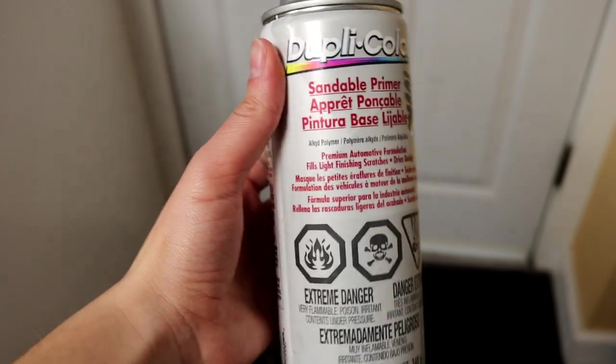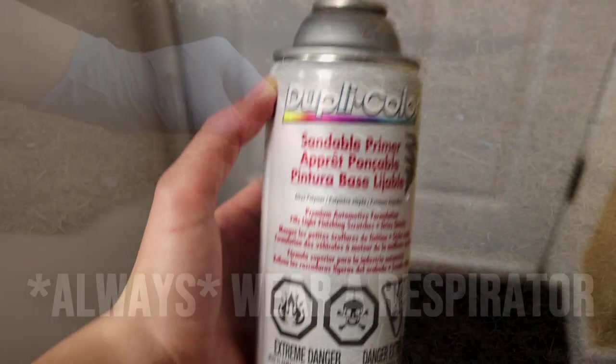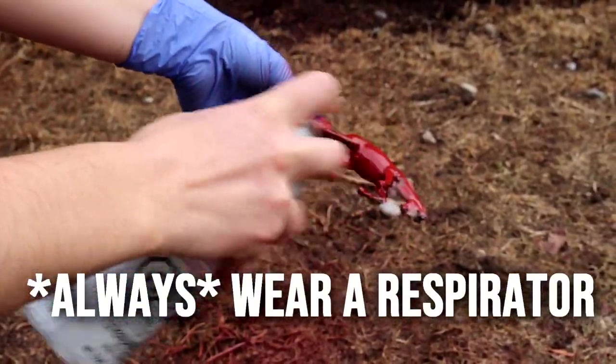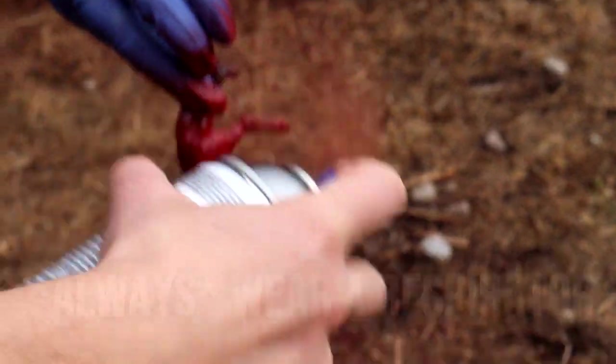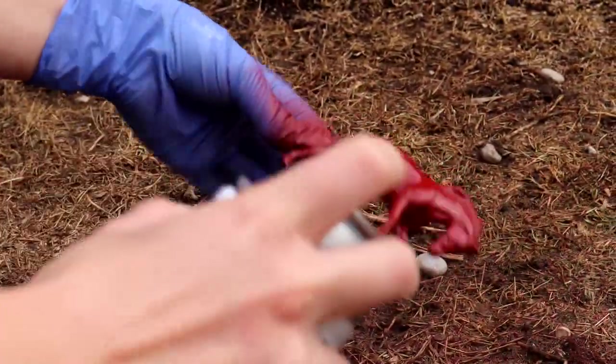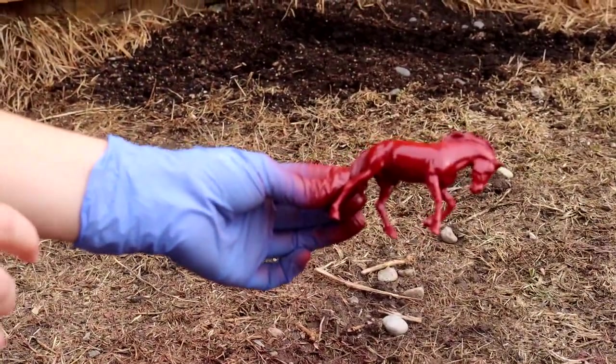I will be using Duplicolor sandable primer in red oxide. The color really doesn't matter. You can use Rust-Oleum primer as well. I always prime outside and bring the model inside to cure. I prime the horse in small strokes. You're going to want coverage but not necessarily dripping coverage. You want to do more layers in finer coats than one fast layer in a drenched coat.